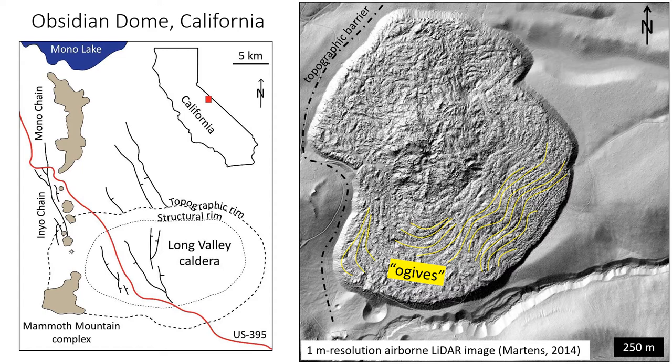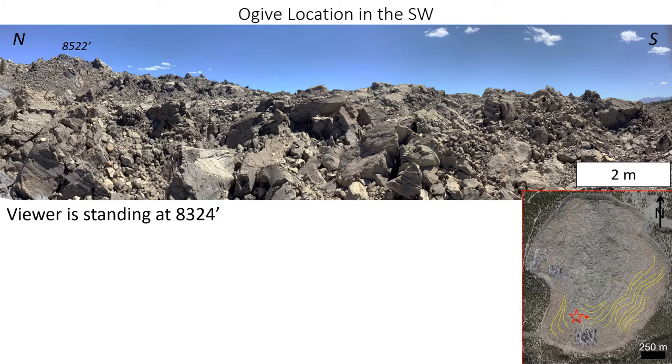As part of my dissertation, I am using Obsidian Dome in California as a case study to test the interpretation that the upper surface of silicic lavas are in ductile compression during emplacement. Obsidian Dome is one of three of the youngest domes erupted in the Inyo chain, as seen in the inset map. It is about 700 years old and, as seen in the lidar image, was relatively unimpeded during eruption to the east, flowing into a paleo channel and across a paleo slope. Researchers have identified ogives on the upper surface in the southern portion, highlighted here in yellow.